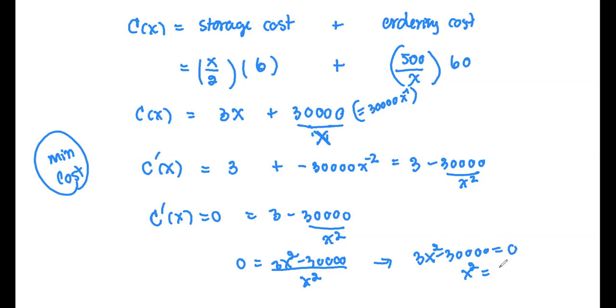It's 3x squared. So x squared equals 10,000. And take the square root both sides. We get x equals 100 and negative 100. But we ignore the negative number.